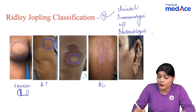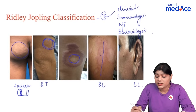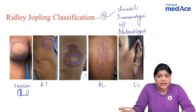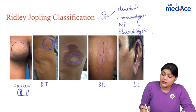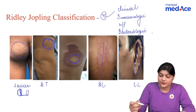In the lepromatous pole, ear infiltration is present, known as 'Buddha ears,' and there is loss of the lateral eyebrows, known as madarosis.